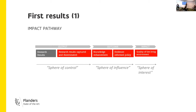When you try to monitor impact, you need to identify impact pathways — something we found consistently across all the literature we read. You have the sphere of control, which is the direct impact — the output when research is done, like delivering a report. Then there's the sphere of influence, which is more difficult — knowledge enhancement and evidence-informed policy. Finally, the sphere of interest is your ultimate goal: raising the quality of the living environment.